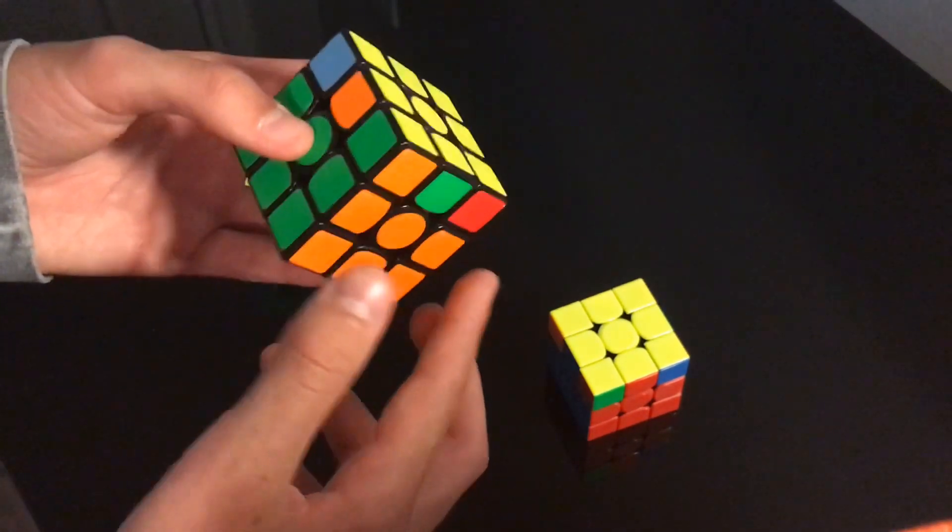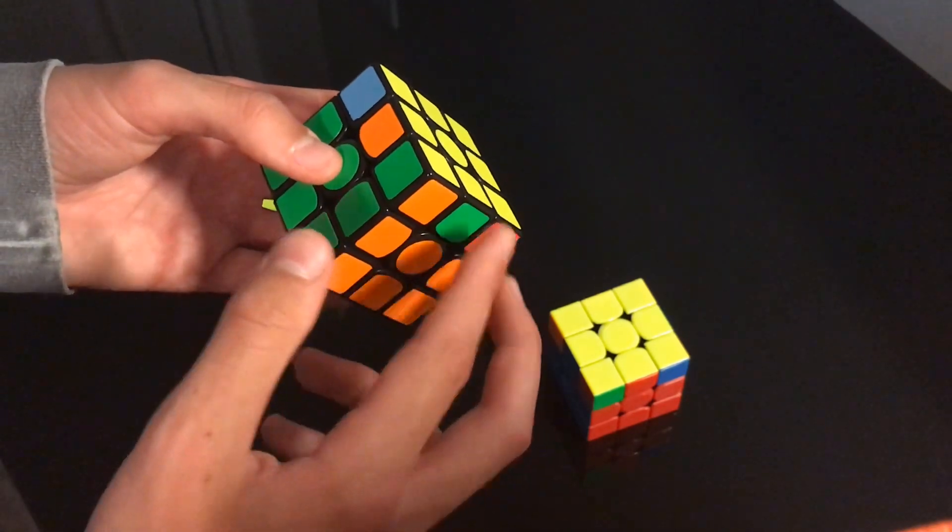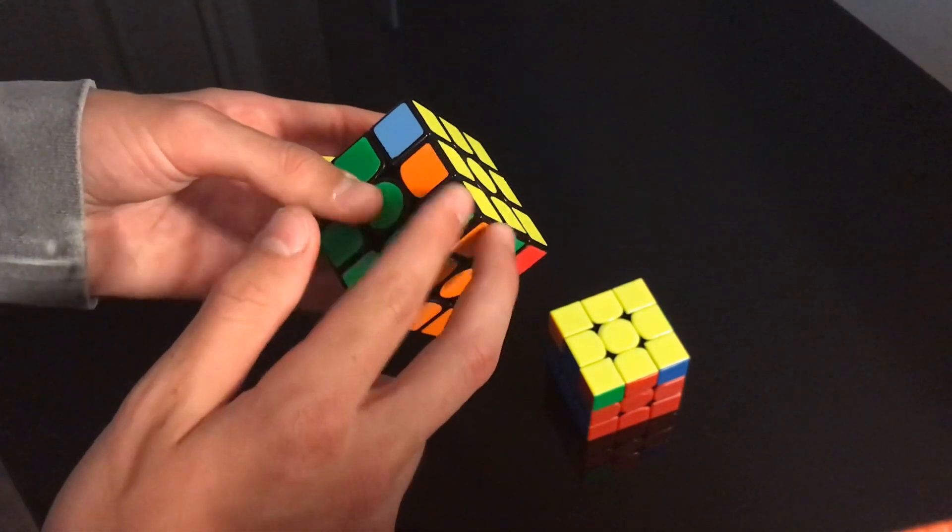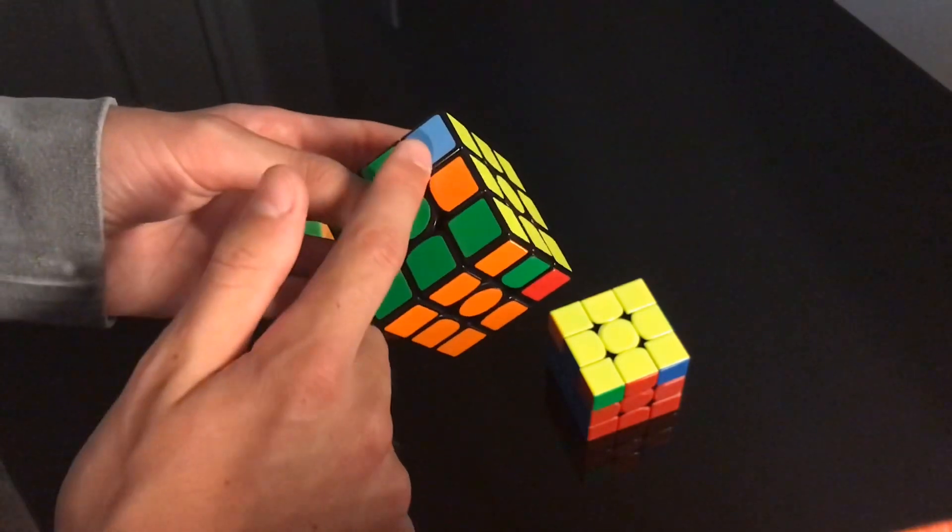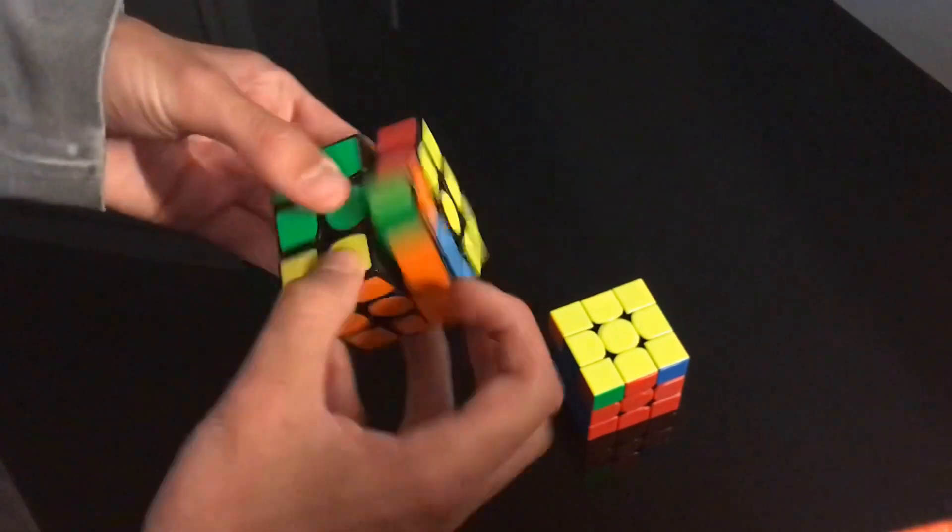And then we just go U2 and do our Y perm. So the thing that separates the V perm from the rest is it has the checkers. However, it's like this towards you instead of on the sides. So we can go U' and just do our normal V perm.